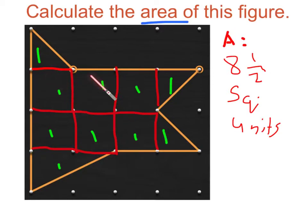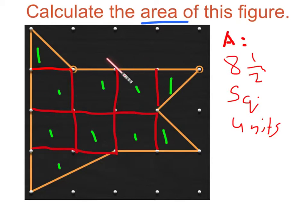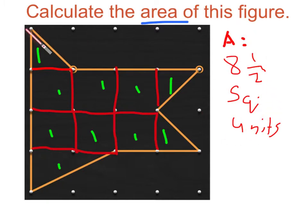Four, three, three, four, five, six, six and a half, seven, seven and a half, eight and a half. So, this is eight and a half square units.